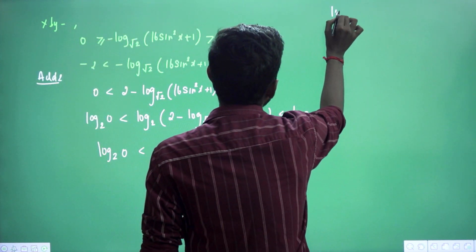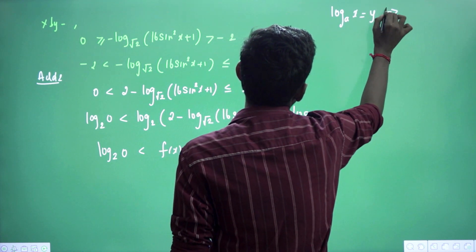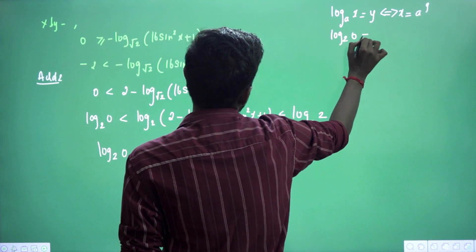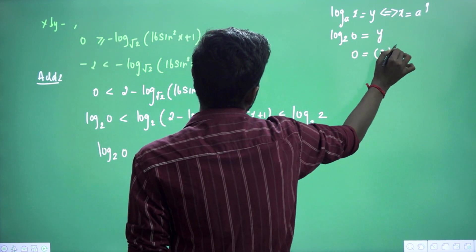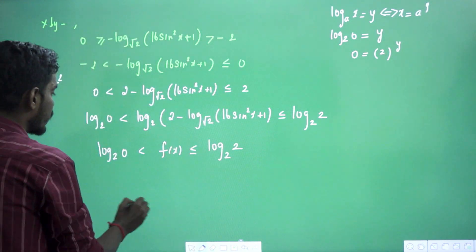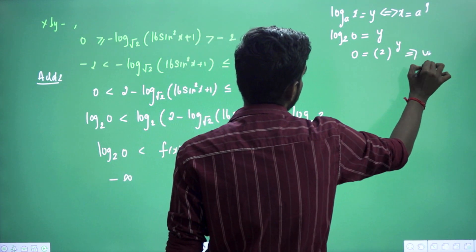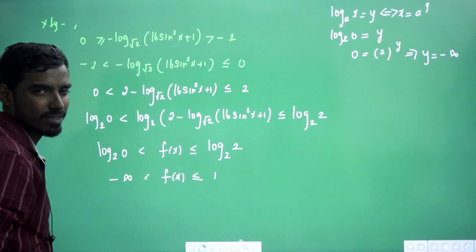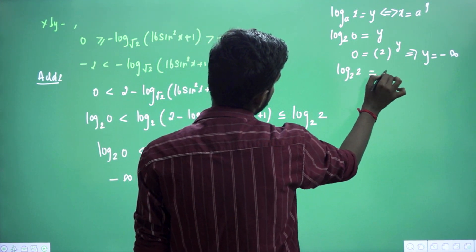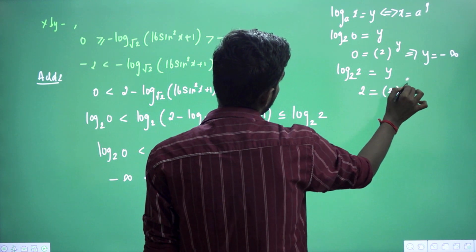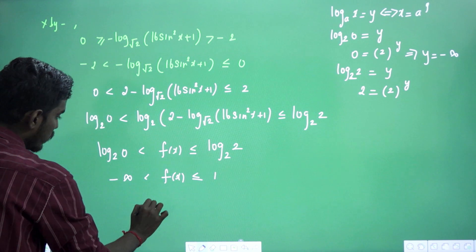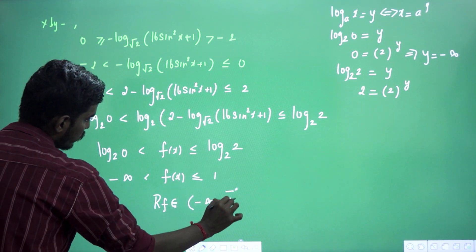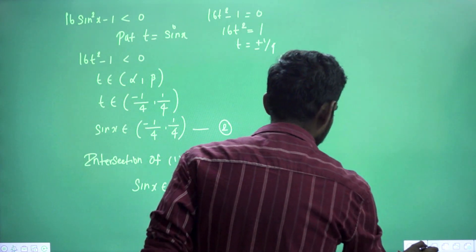Now evaluating: log₂(0) — since 2^(−∞) = 0, we have log₂(0) = −∞. And log₂(2) = 1, since 2^1 = 2. Therefore the range of f is (−∞, 1], i.e., minus infinity to 1 with 1 included (closed bracket at 1).